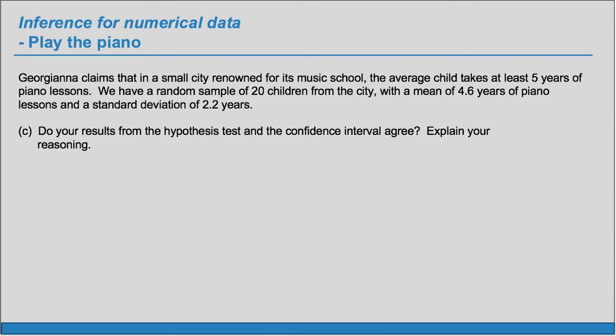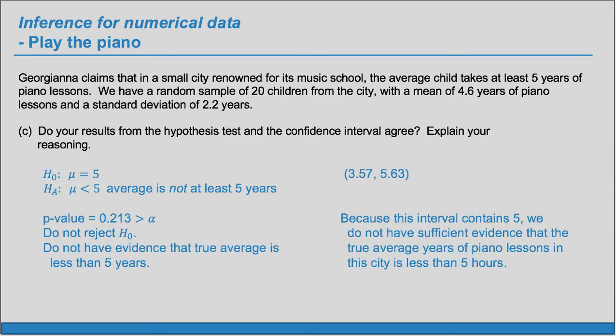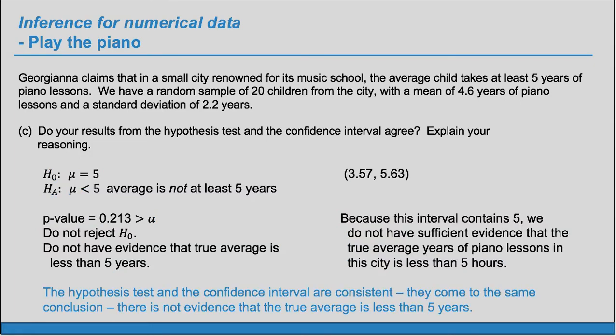Part C: do the results from the hypothesis test and the confidence interval agree? To summarize: for the test, we did not reject the value of 5, so we did not have evidence it was less than 5. For the confidence interval, 5 was in our interval and was a reasonable value. Yes, as expected, the hypothesis test and the confidence interval are consistent — they come to the same conclusion: not enough evidence that the true average is less than 5. Five is a reasonable value.